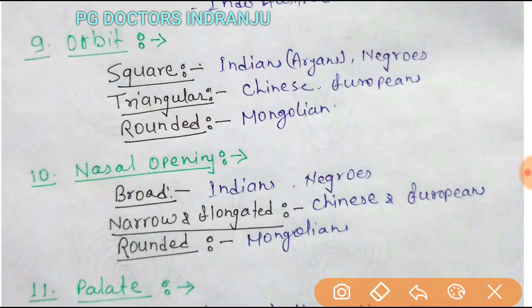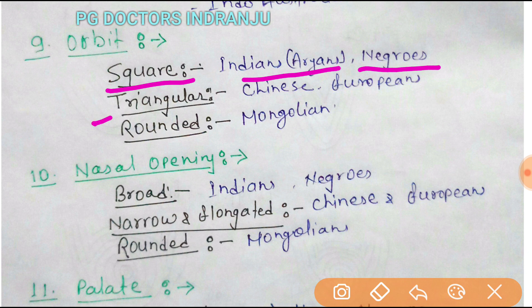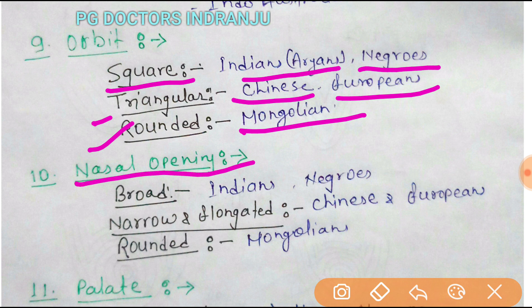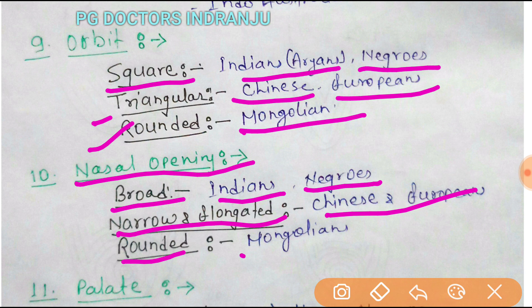The orbit also helps determine race. A square orbit is found in Indians or Aryans. A triangular orbit is found in Chinese and Europeans. A rounded orbit is found in Mongolians. Nasal opening also varies by race: broad is found in Indians and Negroes, elongated is found in Chinese and Europeans, and rounded is found in Mongolians.